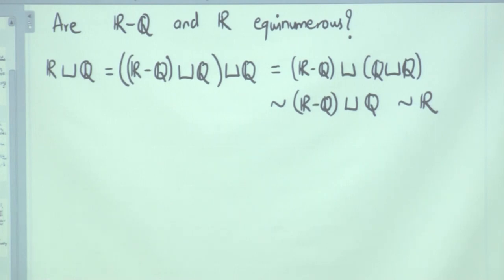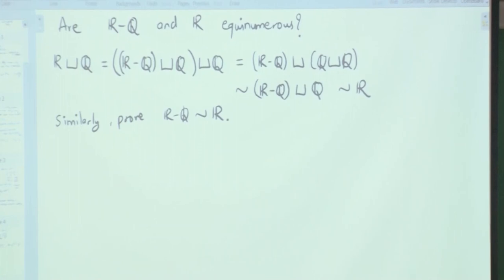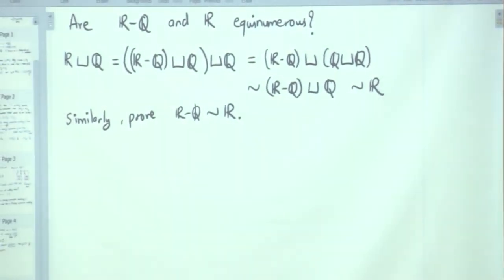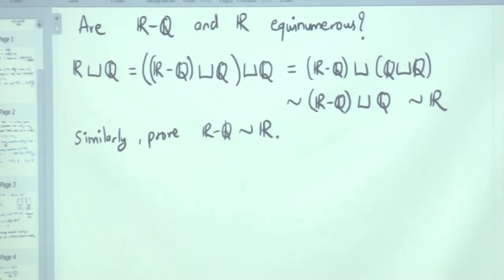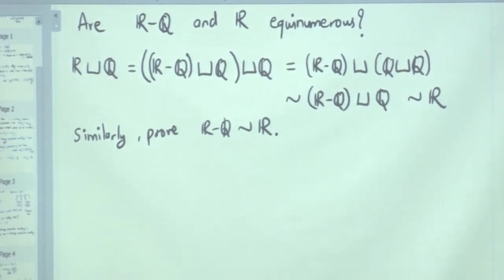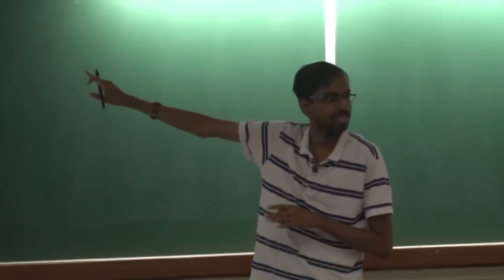Similarly, I could have started with real numbers and taken out two copies of rationals — two countable subsets — and done the same thing. So, prove that R minus Q and R have the same cardinality. Basically, if your set happens to be uncountable, then it doesn't matter if you take out a countable subset of it. Your cardinality is not going to change; you will still remain in bijection with that set. This is the argument.